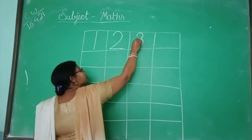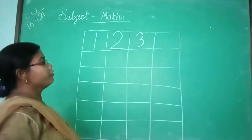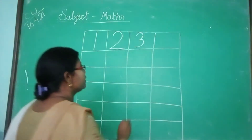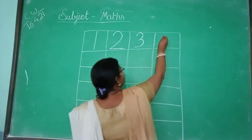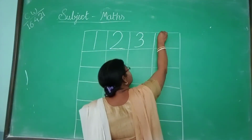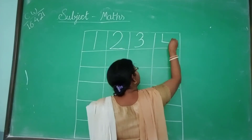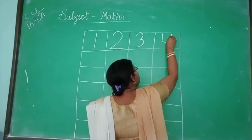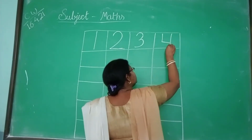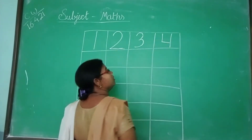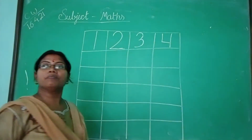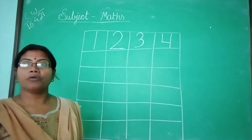Okay? Now number 4. 4 is very easy. Standing line, slipping line, one more standing line — it becomes number 4.